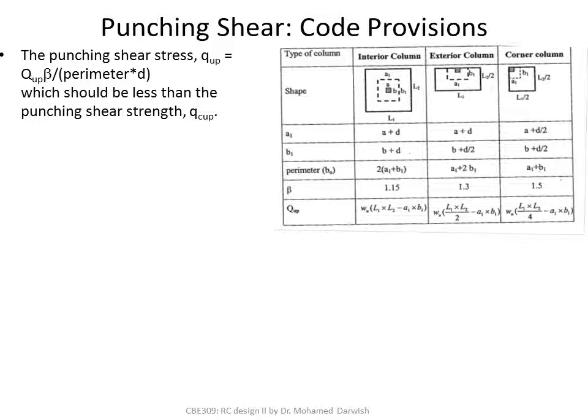A1 and B1 are the column dimensions plus D. For an exterior column, it's A1 plus 2B1 because the failure plane has changed. For a corner column, it's A1 plus B1. This is why corner and exterior columns are more critical. One merit of having an edge beam is that it protects exterior and corner columns from punching failure — no punching would happen there.